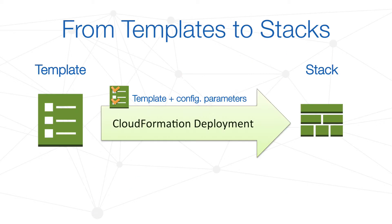Thanks to AWS CloudFormation, you can describe your IT infrastructure and deploy it anytime you need, creating different environments — for example, testing, staging, production, etc. — in a few minutes. Using file or code versioning tools like Git or SVN, you can keep track of each infrastructure modification, linking your infrastructure model to the application ecosystem itself.